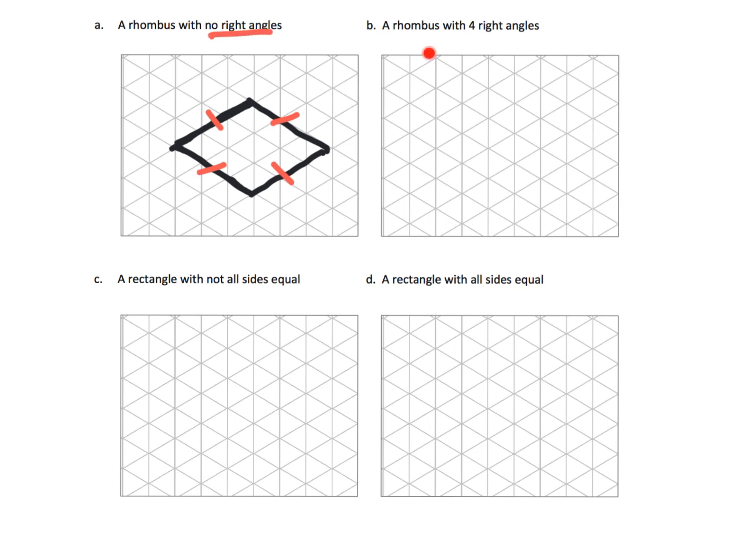Question B says now draw a rhombus where you do have four right angles. This is going to look like - it's not easy because the lines, we kind of have to go against the lines - but what I'm trying to draw is a square. How do I know it's a rhombus? Well, it's a rhombus because it has four sides that are all equal to each other. I also happen to draw it so that it had four right angles because that's what it asked for.